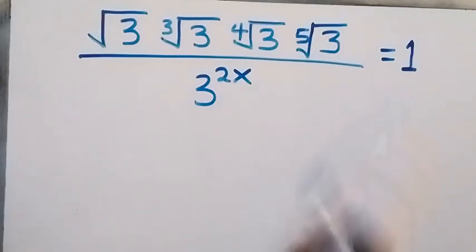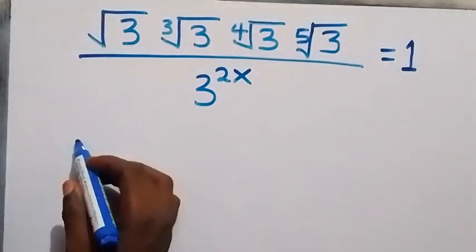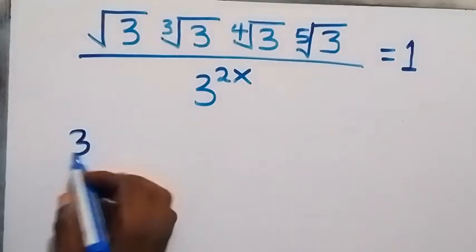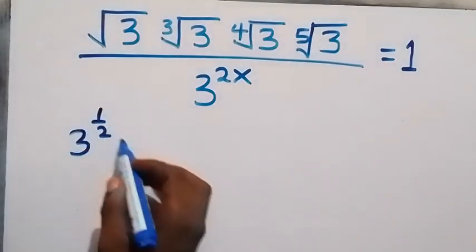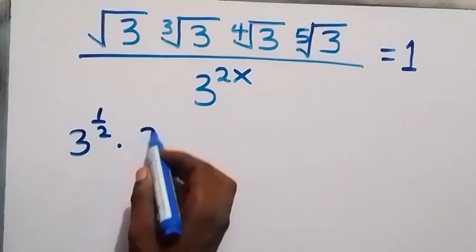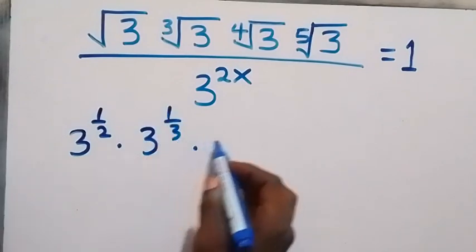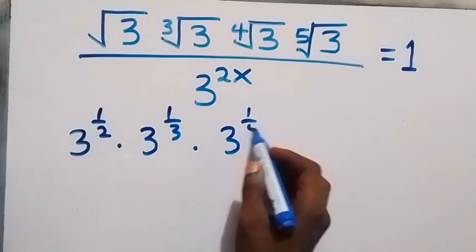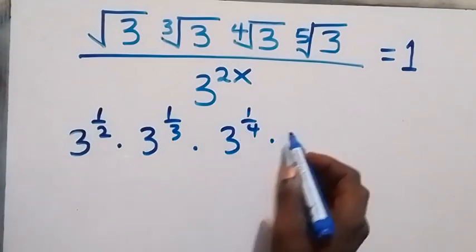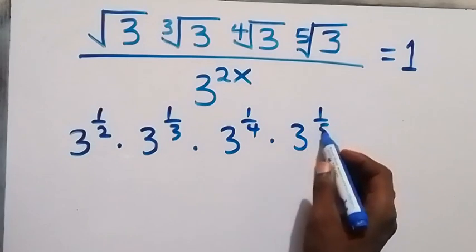From here we can write this as 3 raised to power one-half, times 3 raised to power 1 over 3, times 3 raised to power 1 over 4, times 3 raised to power 1 over 5.